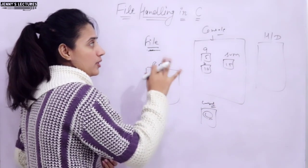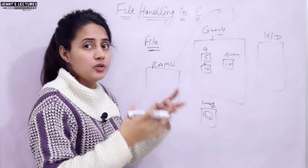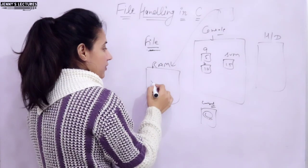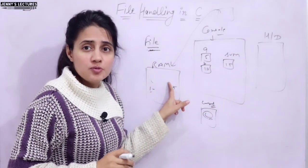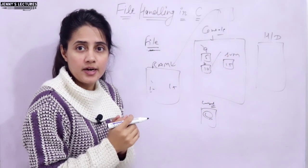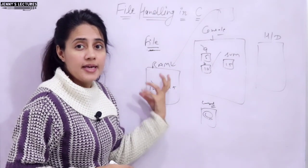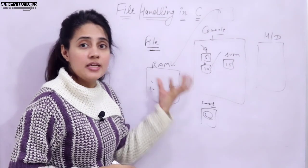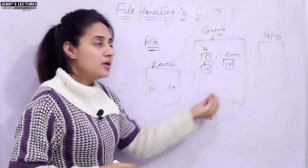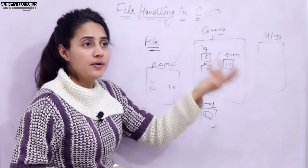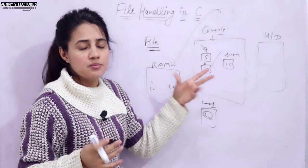When a program runs, it's loaded into RAM. So if you enter values like 5 and 10, the sum 15 is displayed, but after terminating the program, that data is lost — because those variables and values are in RAM, which is volatile memory. Whenever you close the program, those values are gone. You can run the program again, but you'd have to enter new values.